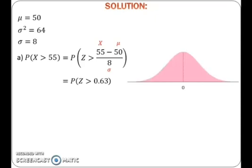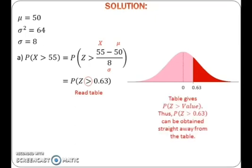After that, draw a bell-shaped graph with zero at the center. Plot 0.63 on the graph, draw a vertical line and shade the region of probability that we want to find. The region of probability depends on the inequality sign. Because we want to find probability of z greater than 0.63, the region would be to the right of 0.63. To find probability, refer to the standard normal distribution table. Since the table gives probability of z greater than a certain positive value, probability of z greater than positive 0.63 can be obtained straight away from the table.